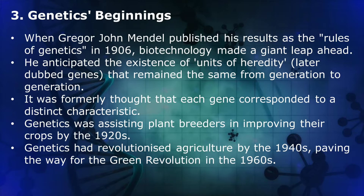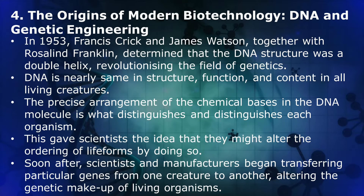Genetic Beginnings: When Gregor Johann Mendel published his research on the rules of genetics in 1906, biotechnology made a huge leap ahead. He anticipated the existence of units of heredity, later dubbed genes, that remained the same from generation to generation. It was formally thought that each gene corresponded to a distinct characteristic. Genetics was assisting plant breeders in improving their crops by the 1920s, and revolutionized agriculture by the 1940s, paving the way for the green revolution in the 1960s.